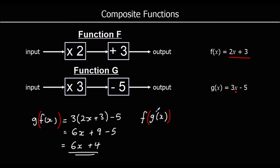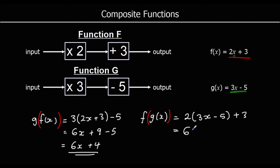If we run g first and then f, that's the same as taking the entire g function and substituting into f. So it's 2 times (3x minus 5) plus 3. Expanding the bracket, that's 6x minus 10 plus 3, or 6x minus 7.